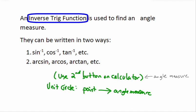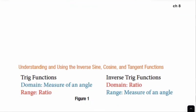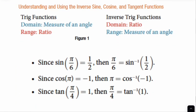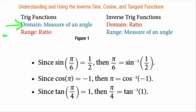This will be a little bit familiar, but you have to be careful with the notation. For a trig function, the domain is the angle measure and the range is the ratio — opposite over hypotenuse, opposite over adjacent, whatever the ratio happens to be. For an inverse trig function, look what happens: the domain and range switch. The domain is the ratio, and the range is the angle measure.